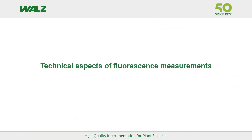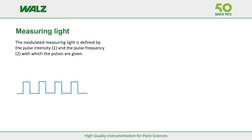After this short introduction, we will now switch to the main topic: technical aspects of fluorescence measurements. We will start with measuring light and F0. Discussing the modulated measuring light, two parameters have to be considered: the pulse intensity and the pulse frequency.